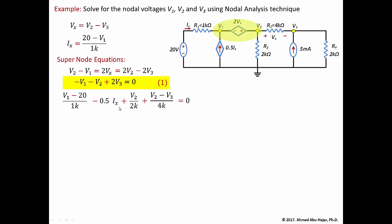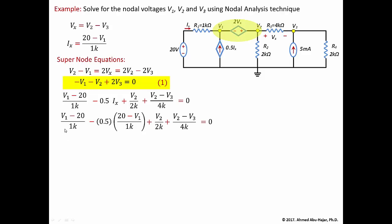We substitute ix = (20 minus v1) over 1kΩ into the equation. Multiplying both sides by 1kΩ to cancel denominators, then grouping by nodal voltage: for v1, we get 1 plus 0.5 = 1.5; for v2, we get 1/2 plus 1/4; for v3, we get minus 1/4. The constants 20 and minus 0.5 times 20 move to the right side.